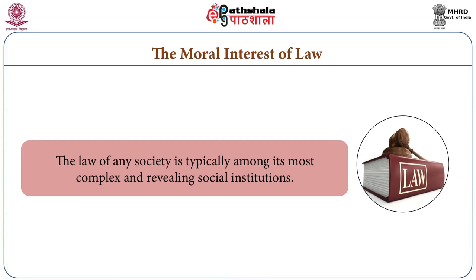The law of any society is typically among its most complex and revealing social institutions. If a society consists of certain social institutions, those institutions are governed by certain laws; otherwise we would have a very arbitrary or ambiguous kind of social activity. What makes society possible is rule-following, and rules are part of a clearly laid-out package.